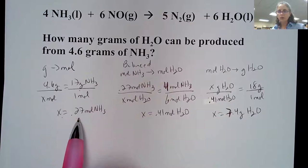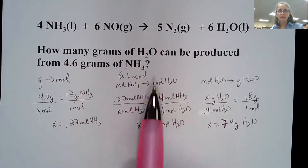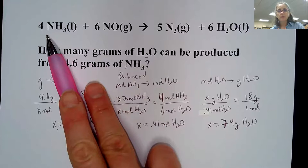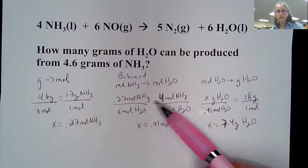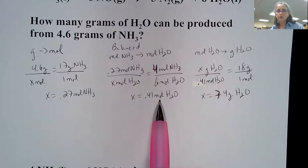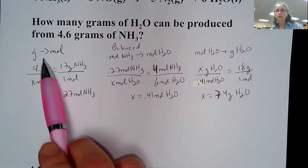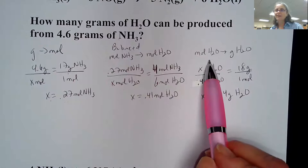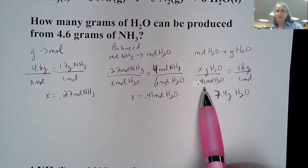Then use the balanced chemical equation for the mole-to-mole relationship. There's a 4 in front of ammonia and a 6 in front of water, so it's a 4-to-6 relationship. Taking moles of ammonia over moles of water gives 0.41 moles of water. The last step is going from moles to grams. The molar mass of water is 18 grams per one mole. Cross multiplying gives 7.4 grams of water.